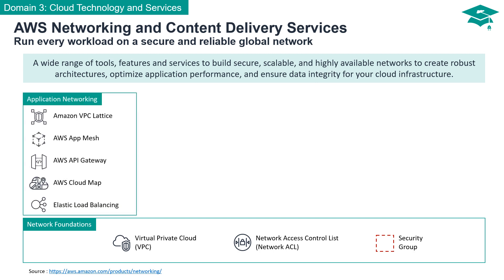Moving beyond the basics, AWS offers application networking services such as Amazon VPC Lattice, AWS App Mesh, AWS API Gateway, AWS Cloud Map, and Elastic Load Balancing.